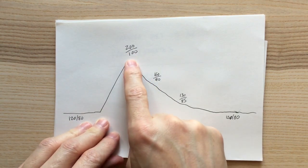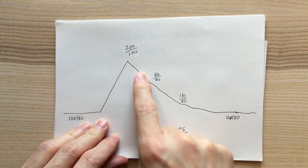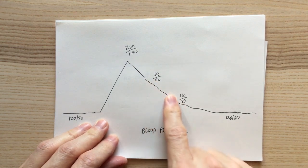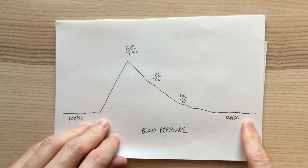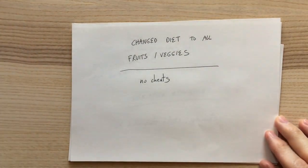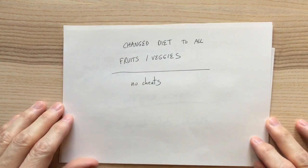They said there's nothing wrong with you. I'm like, of course there's something wrong with me, I just had 200 over 100 blood pressure. Over the next day or two it would slowly come down, and then I had to try to figure out what was wrong. So I changed my diet.